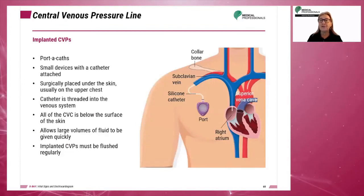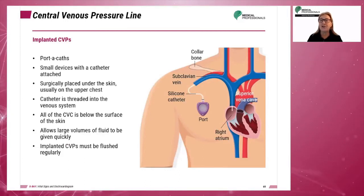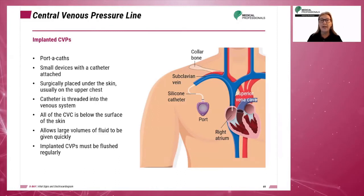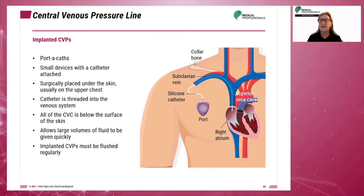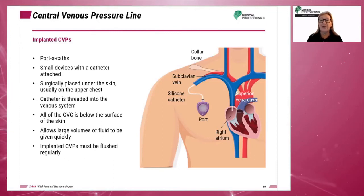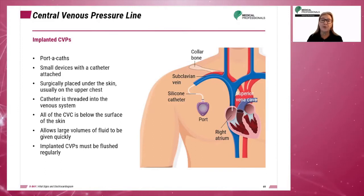Implanted ports, sometimes called port-a-caths, are small devices with a catheter attached. The device is surgically placed under the skin, usually in the upper chest. The catheter is threaded into the venous system. When in place, all of the CVC is below the surface of the skin. This allows large volumes of fluid to be given quickly or irritating medication to be administered easily into a large vein. Implanted CVCs must be flushed regularly.